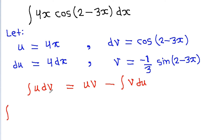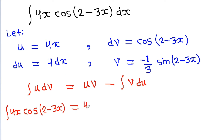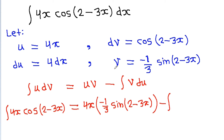The integration of u dv, where u is 4x and dv is cos(2-3x), is equal to u times v — so 4x times minus 1 by 3 times sin(2-3x) — minus the integral of v, which is minus 1 by 3 sin(2-3x), times du, which is 4 dx.